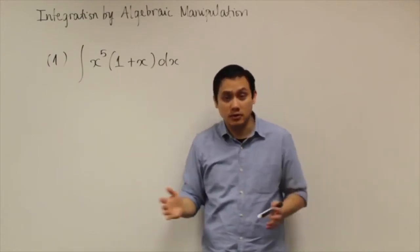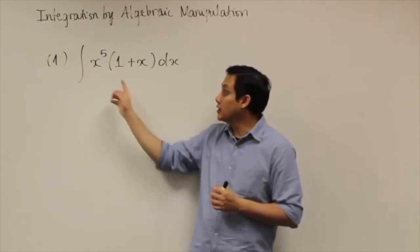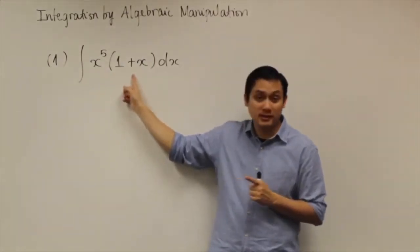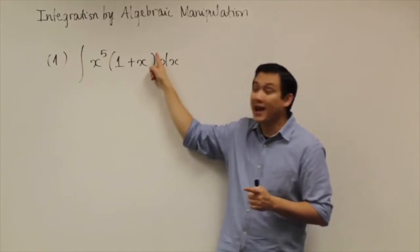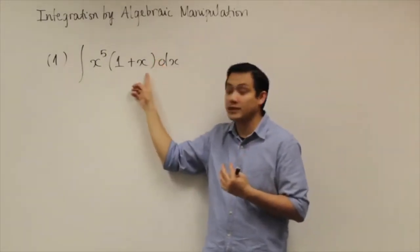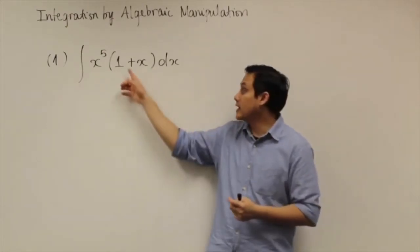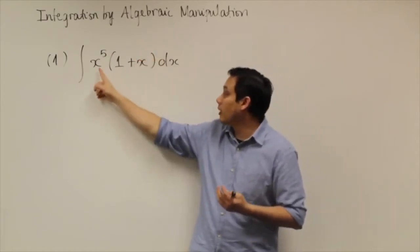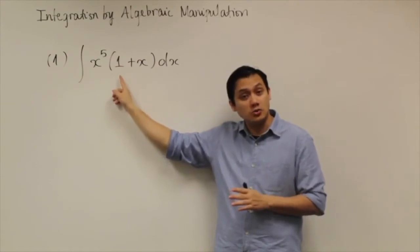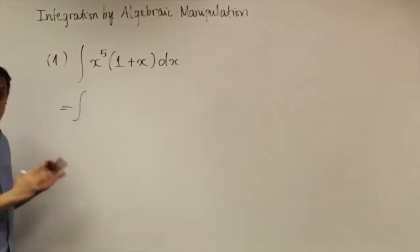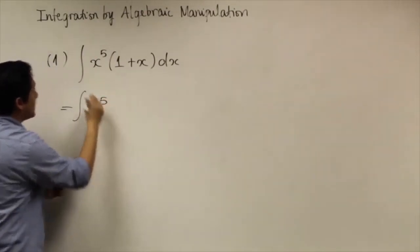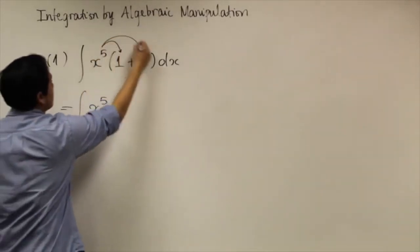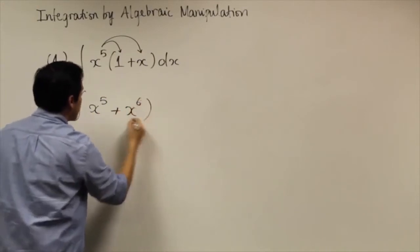So you have to find some other way to solve this integral. To do that, you look at x to the fifth, and if you distribute it into the parentheses — you can do that only because the parentheses are raised to the power of 1 — when you distribute x to the fifth, you get the integral of x to the fifth, because x to the fifth times 1 is x to the fifth, and x to the fifth times x gives you x to the sixth power.